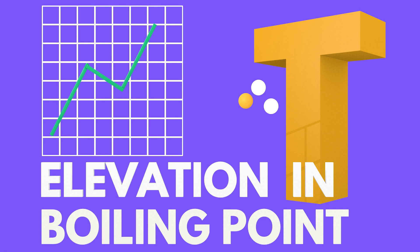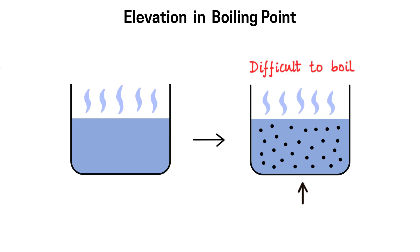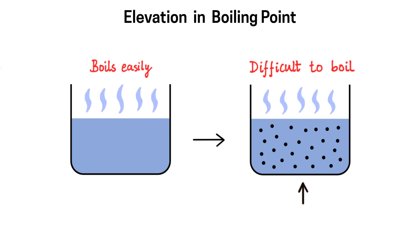We have understood boiling point. Now let's understand what elevation in boiling point is. Here on one side we have a pure liquid, and then we add a non-volatile solute to it — a solute that cannot create vapors. Due to this non-volatile solute, it becomes difficult to boil the liquid. Earlier, when we had a pure liquid, it was very easy to boil. But when we add a non-volatile solute, boiling becomes difficult. So here we notice elevation in boiling point — the boiling point has elevated due to the non-volatile solute.